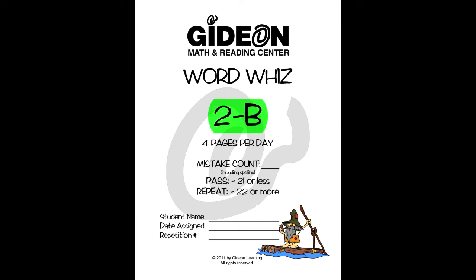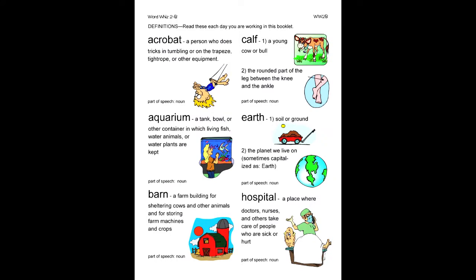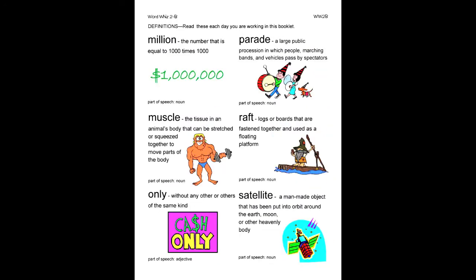In WordWiz Booklet 2B, the student will complete 4 pages per day and must make 21 mistakes or less to pass. On the first two pages of this booklet, you will find a list of this booklet's definitions. It is important to read these every day you are working in this booklet. Let's read some together.